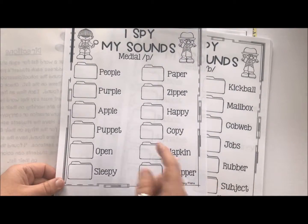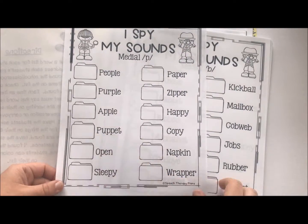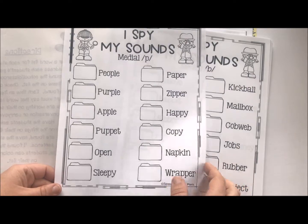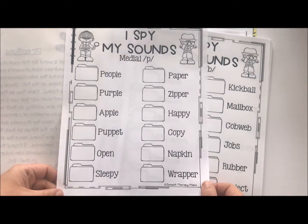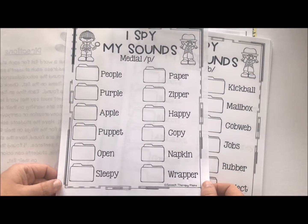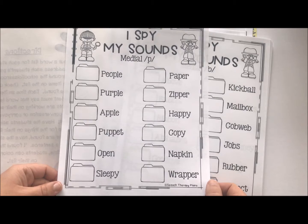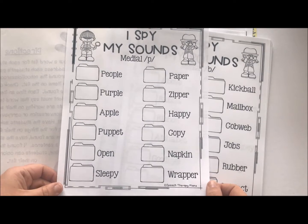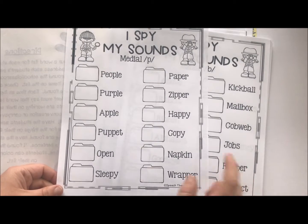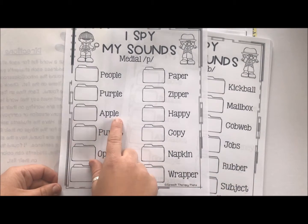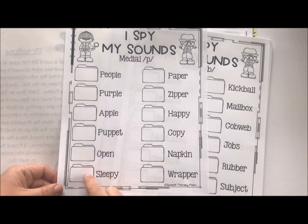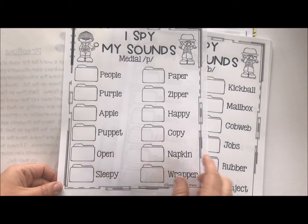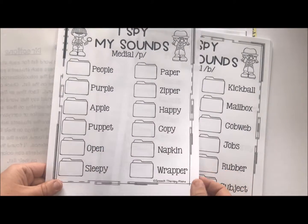So they're saying their words many times within the one session, even though we're kind of up and moving and walking around. We'll talk about different purple things, talk about if they like apples when we're looking for an apple, talk about what kind of puppets they've ever seen, etc.